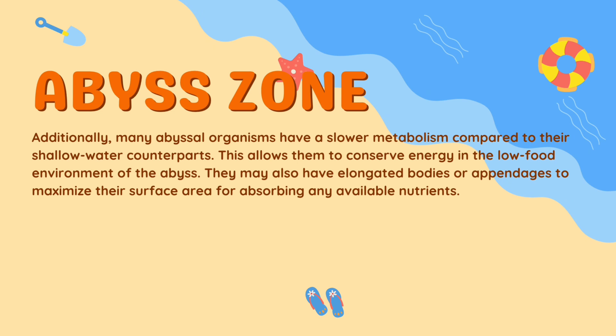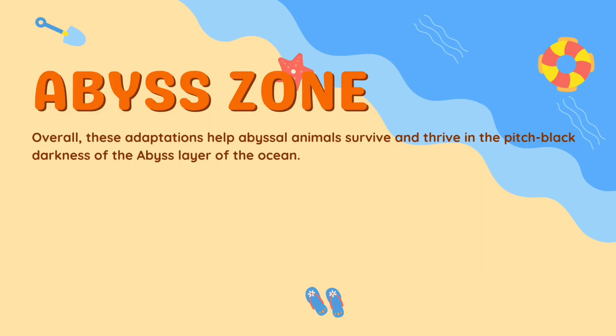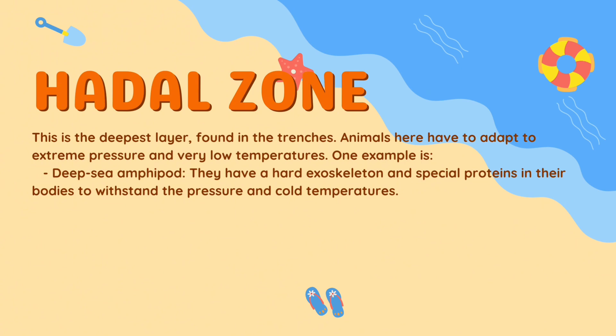Additionally, many abyssal organisms have a slower metabolism compared to their shallow-water counterparts, allowing them to conserve energy in the low-food environment of the abyss. They may also have elongated bodies or appendages to maximize their surface area for absorbing available nutrients. Overall, these adaptations help abyssal animals survive and thrive in the pitch black darkness of the abyssal layer.